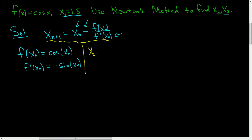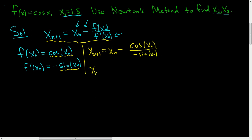Now we're just going to plug everything back into our formula. So x sub n plus 1 is equal to x sub n minus f of x sub n — that's just the cosine function — so cosine x sub n, divided by the derivative, which is negative sine of x sub n. We have two negatives, so we're going to get a positive. So x sub n plus 1 is equal to x sub n plus cosine x sub n over sine of x sub n.